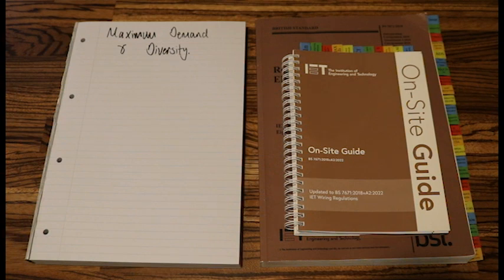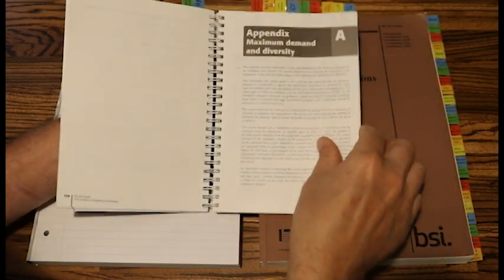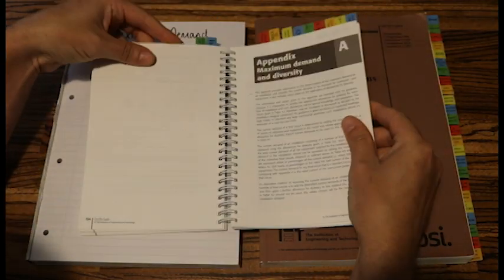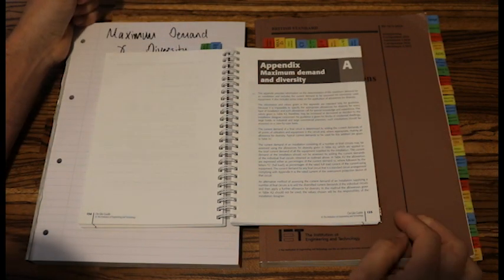Now, if we're going to look at the on-site guide, we'll go to the maximum demand and diversity page. So I just flicked to my maximum demand and diversity page. My tab, that is Appendix A, page 135.